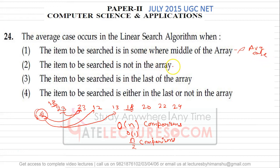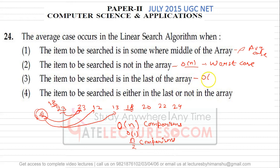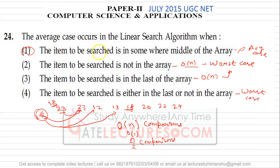If the item to be searched is not in the array, you have to make order of n comparisons — this is your worst case. If the item to be searched is in the last of the array, you will make n comparisons — this is also your worst case. If the item is either not in the array or in the last position, that is also the worst case. Therefore, the correct answer for the average case is the first option: the item to be searched is somewhere in the middle of the array.